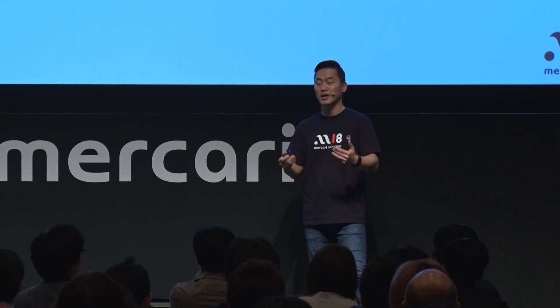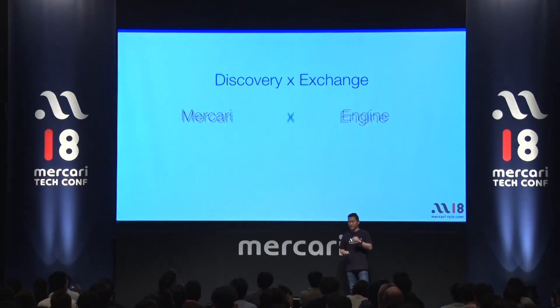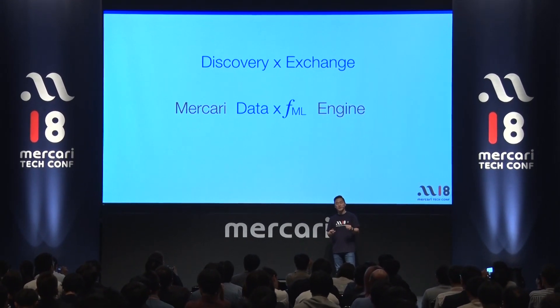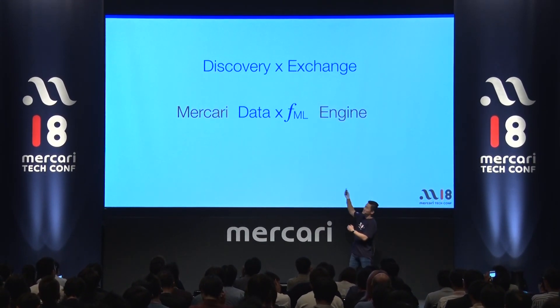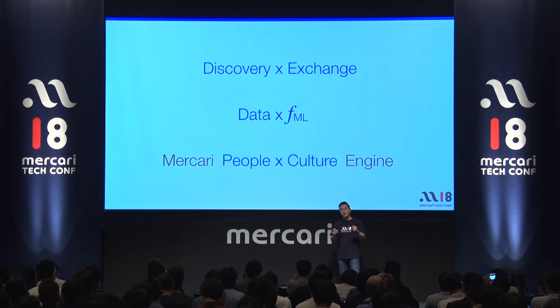Ohayou gozaimasu. My name is Mok O, and I'm here to talk about Mercari Engine. So what is an engine? An engine is a device that goes forward given fuel. I'm going to talk about three types of fuel that power Mercari Engine: first is the discovery and exchange engine, next is the data and machine learning engine — the F that you see is a function of machine learning — and third is the people and culture engine.